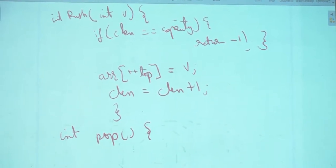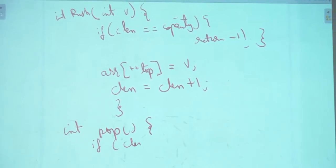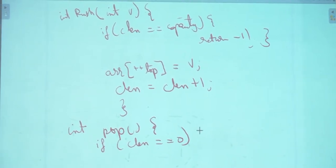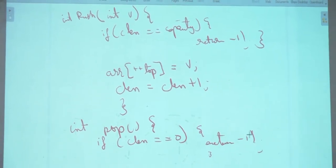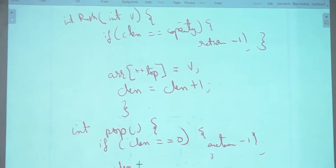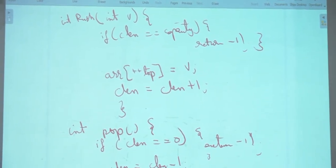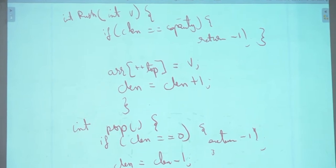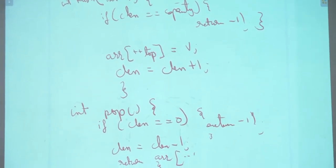In pop: if cLength == 0, return -1. Otherwise, cLength = cLength - 1. Then return arr[--top]. Wait — using pre-decrement on top won't work because I need the top element first, then decrement. So I should not pre-decrement.